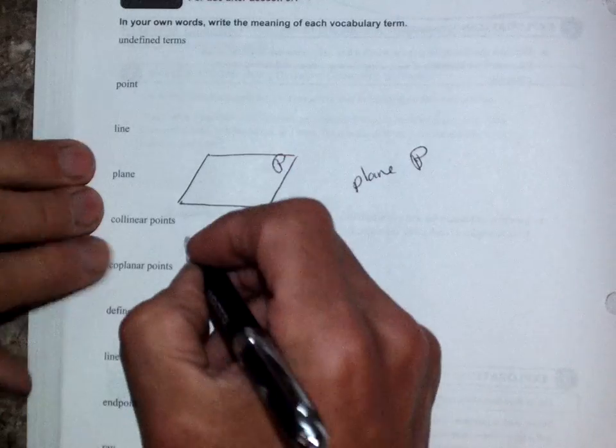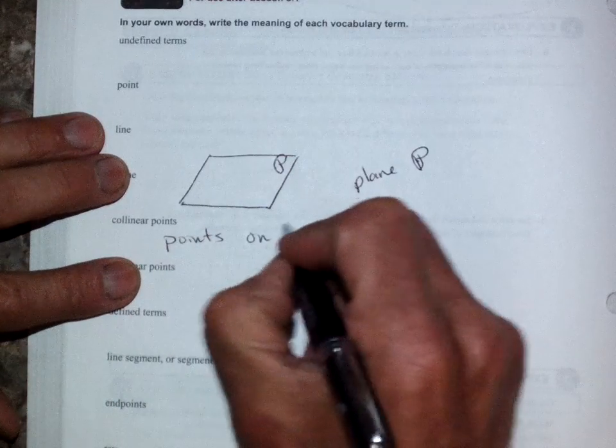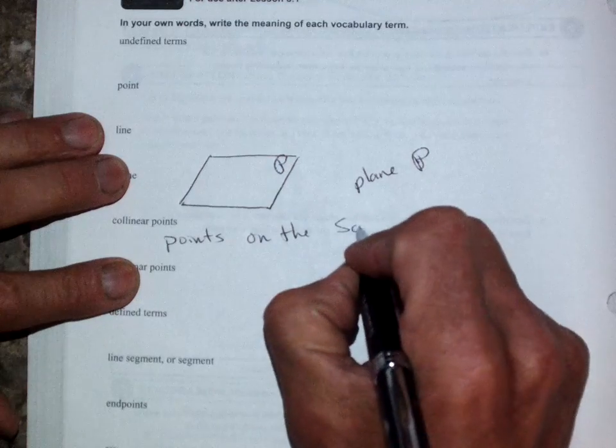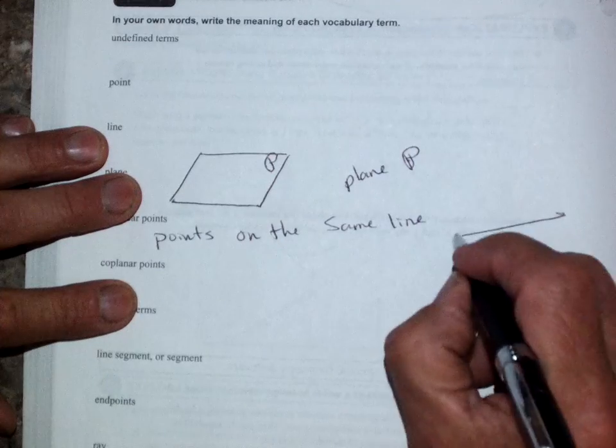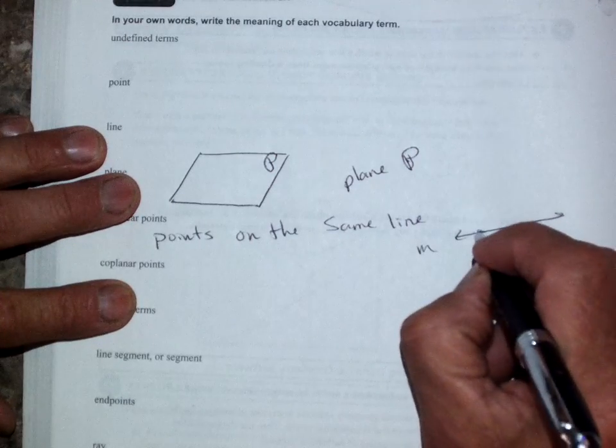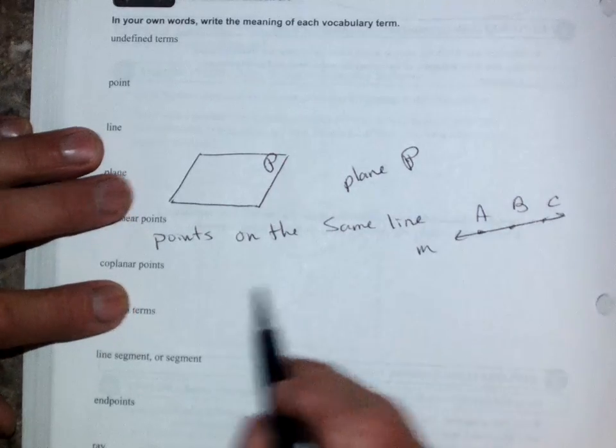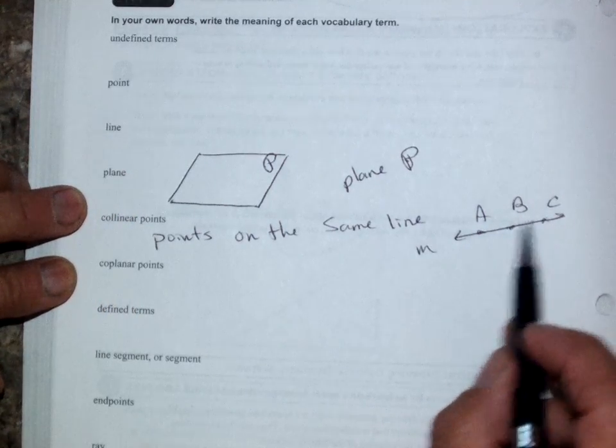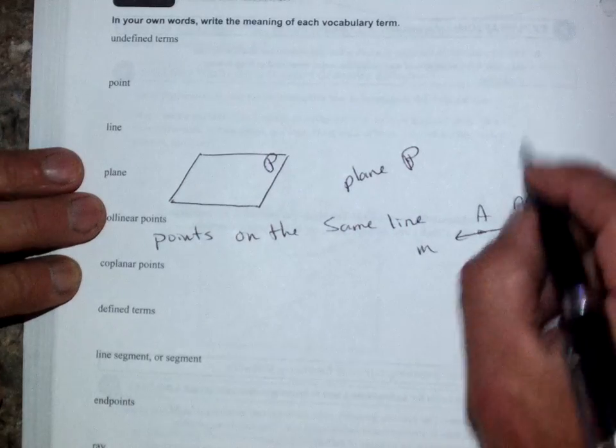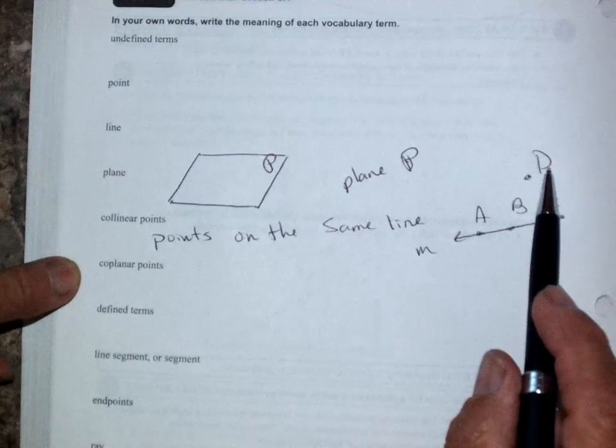Okay. Collinear points are points on the same line. Okay. Like this. Here's a line. Line M. I go point A, point B, and point C. All of those are collinear because they're all habitat, or they cohabitate, or they're collinear because they're all on the same line. If I put a plane, a point up here called D, that's not collinear.